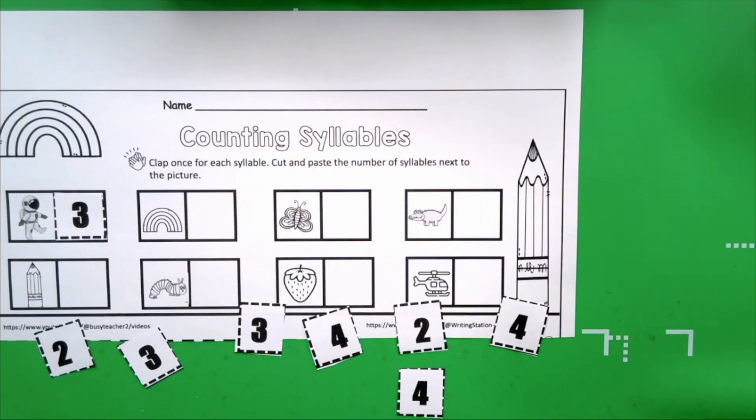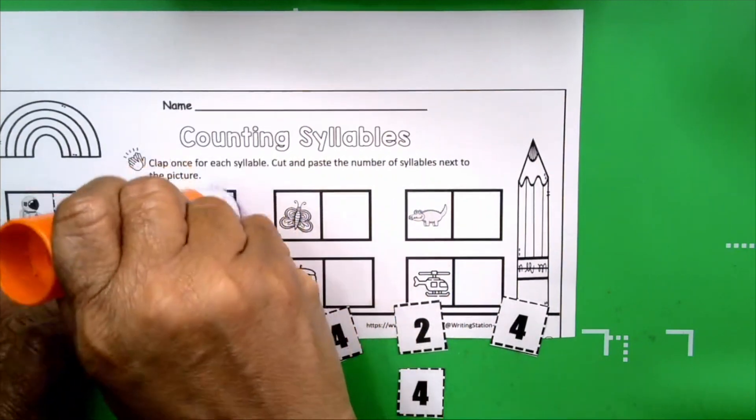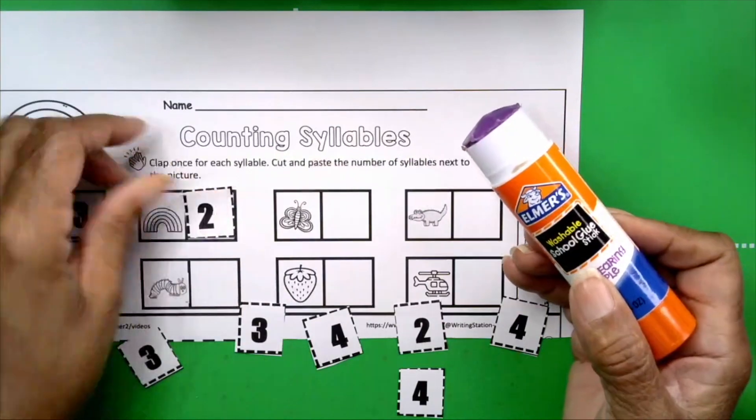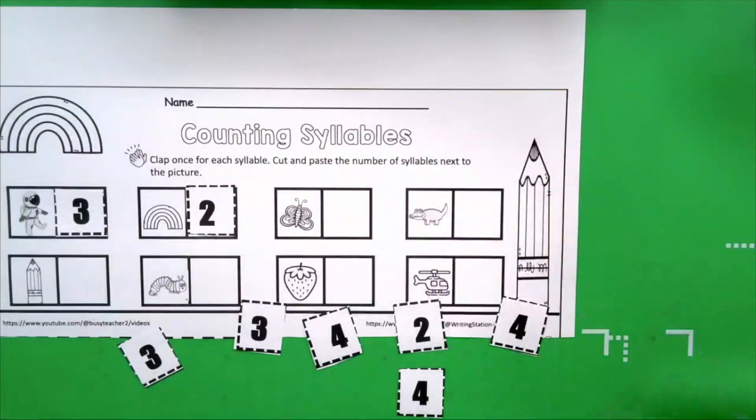Rainbow. Get your hands ready. Like you're going to clap. You're about to clap. Okay. Rainbow. How many claps did you hear? Two. How many syllables are in the word rainbow? Two. So we're going to take our number two. We're going to get our glue stick. Give it a swirl in the box. And we're going to paste our number two next to the rainbow.